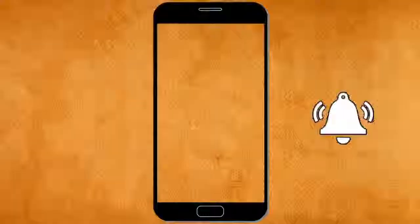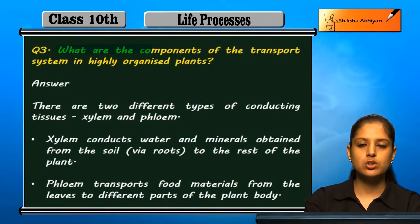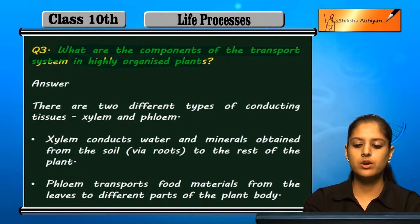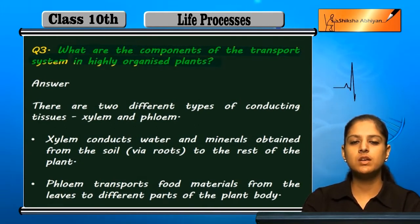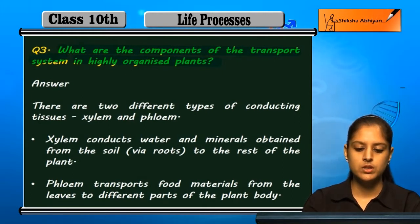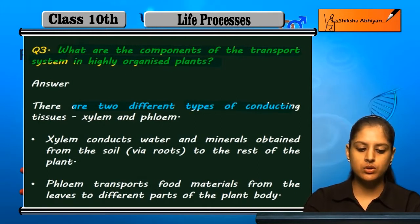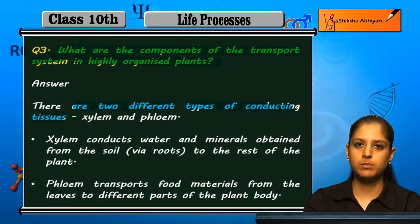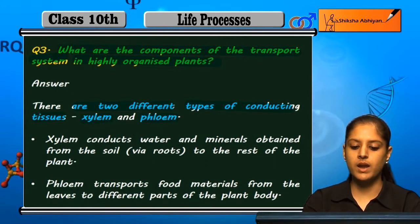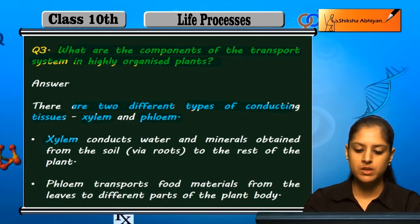Question number three: What are the components of the transport system in highly organized plants? So there are only two components in plants, which are types of conducting tissue — xylem and phloem.